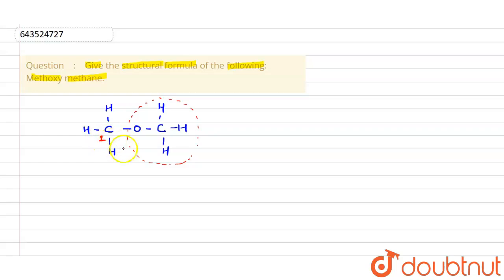In short, this can also be written as CH3-O-CH3. So this is your methoxy, and the second part is your methane. So methoxy methane.